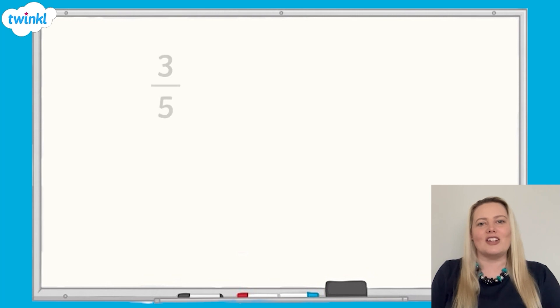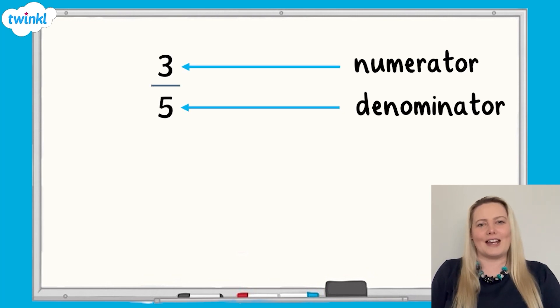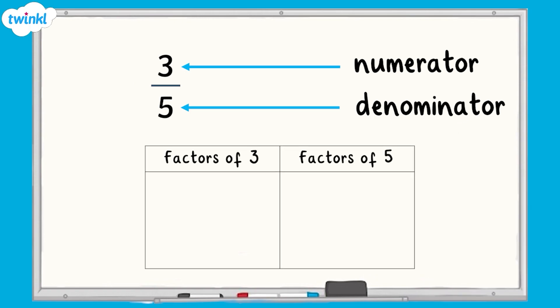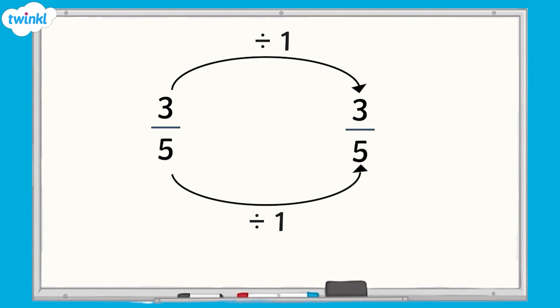Let's take a look at how we can use our knowledge of common factors to help us in simplifying fractions. Here we have the fraction three fifths. Do 3 and 5 have a common factor? 3 only has two factors: 1 and 3. And 5 only has two factors also: 1 and 5. Which means they are both prime numbers. This means that the common factor of 3 and 5 is 1. If we divide the numerator and denominator by 1, the fraction stays the same. Therefore, if the only common factor is 1, the fraction is already in its simplest form and cannot be simplified any further.